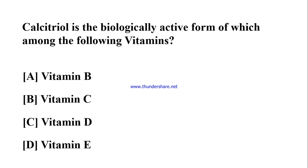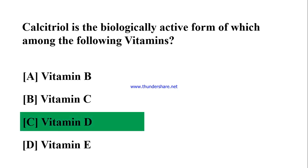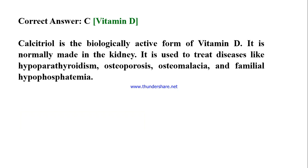Calcitriol is the biologically active form of which among the following vitamins? A) Vitamin B, B) Vitamin C, C) Vitamin D, D) Vitamin E. Correct answer: C) Vitamin D. Calcitriol is the biologically active form of vitamin D, normally made in the kidney. It is used to treat diseases like hypoparathyroidism, osteoporosis, osteomalacia, and familial hypophosphatemia.